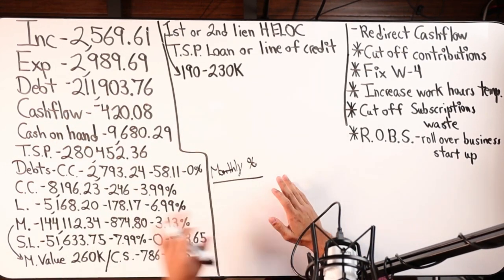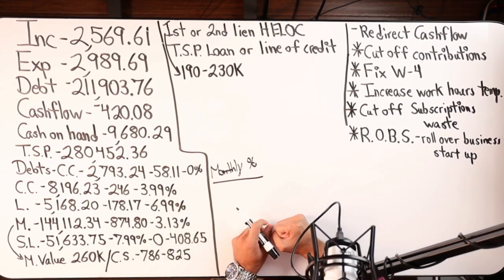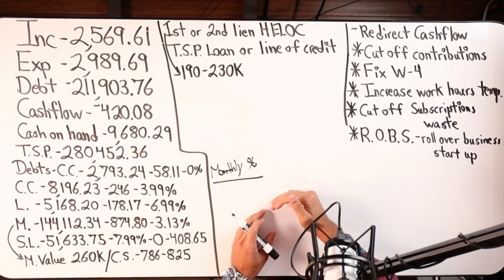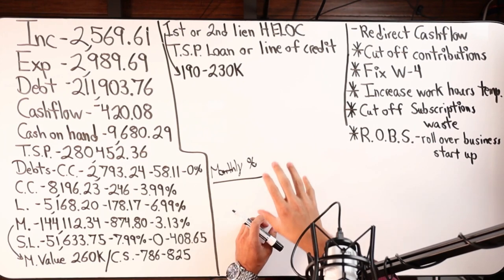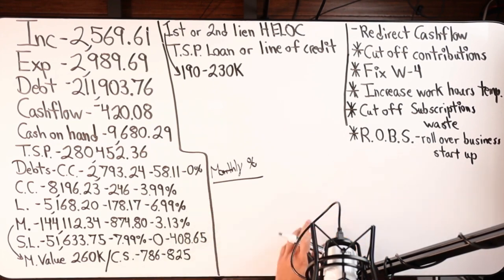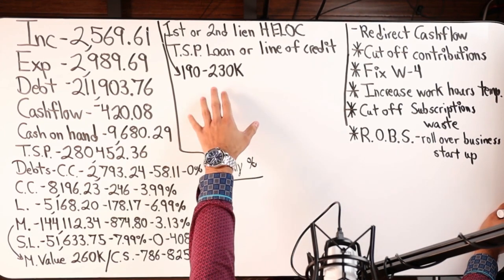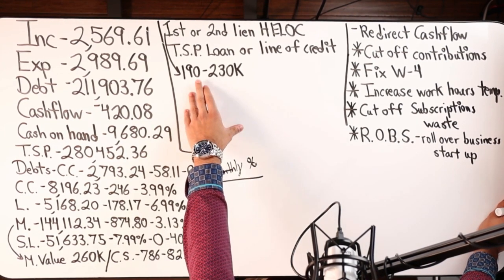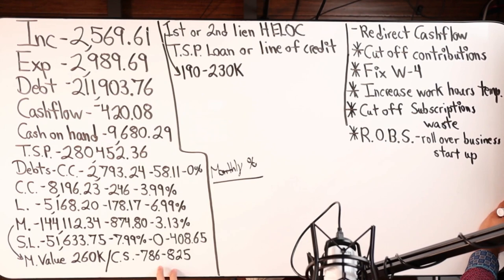For this person, assuming the intent is to get out of debt — to become debt free and take control of their personal finances — that's usually the goal with most of my clients. They want to remove, pay down, and get rid of debt and put themselves in a better financial position. So the first opportunity I see is a first lien HELOC anywhere from one hundred ninety to two hundred thirty thousand dollars.